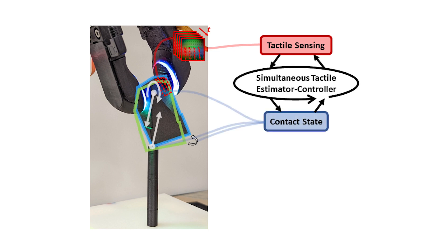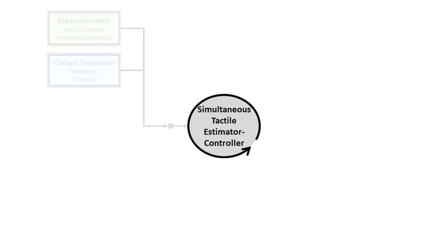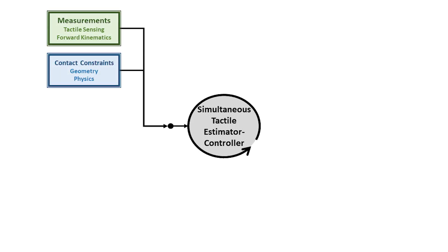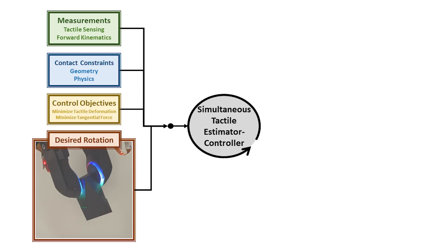We develop the simultaneous tactile estimator-controller to estimate and control the contact state from tactile sensing. The measurements from the tactile sensors and forward kinematics, along with the geometric and physical constraints, are fed into the system to provide the information for estimating the contact states. We also impose control objectives to compute the control sequence. In our case, we set the control objective to minimize the deformation on the sensor finger and the tangential force on the extrinsic contact.